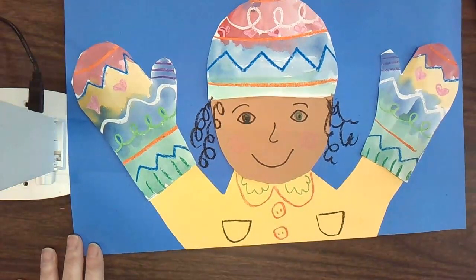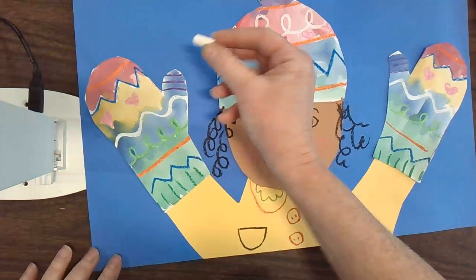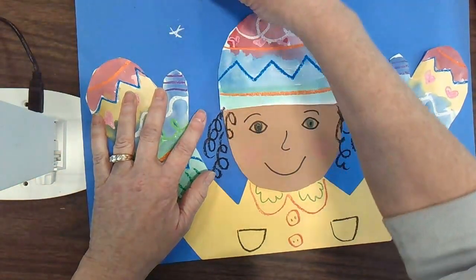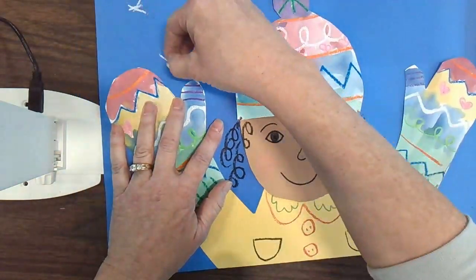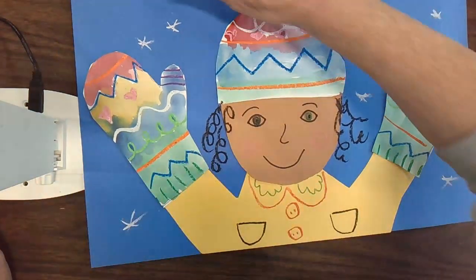The last step will be to get a piece of white chalk and to add some snow. White chalk shows up much better than a white crayon on this dark blue paper. So you can make your snow any way you want, falling all around you.